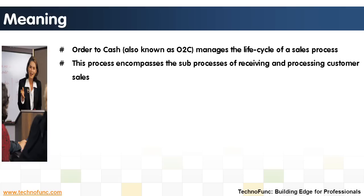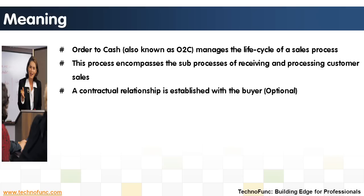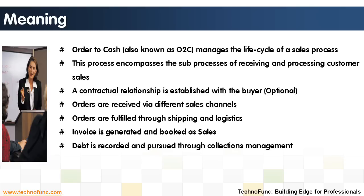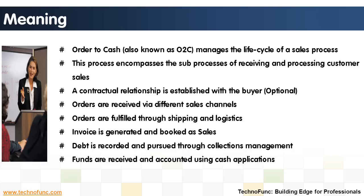This process encompasses the sub-processes of receiving and processing customer sales. A contractual relationship is established with the buyer — this is an optional step, as some businesses need a formal agreement before they can execute orders. Orders are fulfilled through shipping and logistics. An invoice is generated and booked as sales. Debt is recorded and pursued through collections management. Funds are received and accounted for using cash applications.